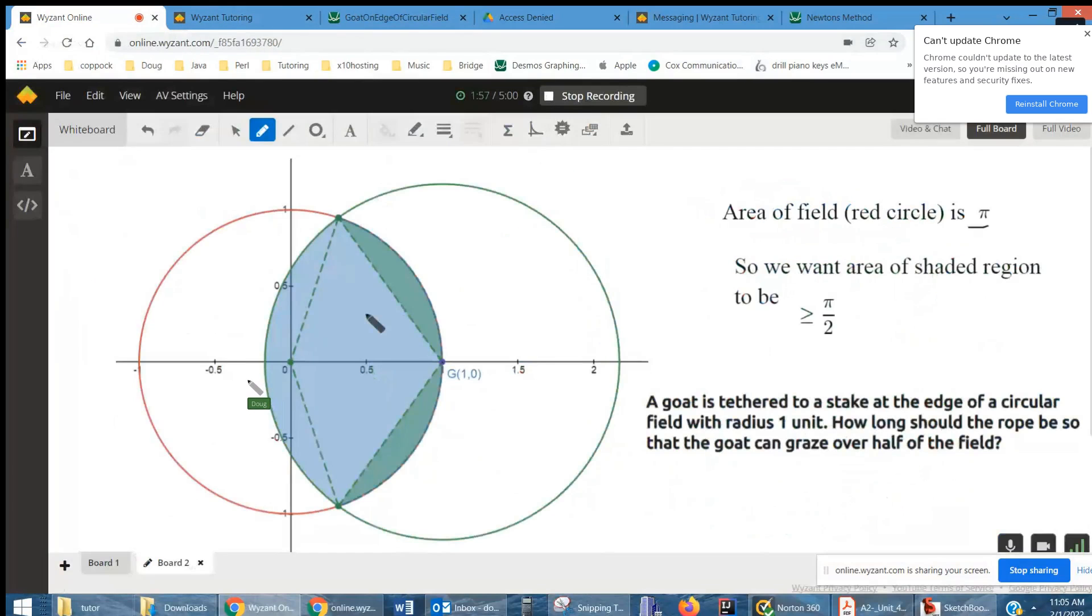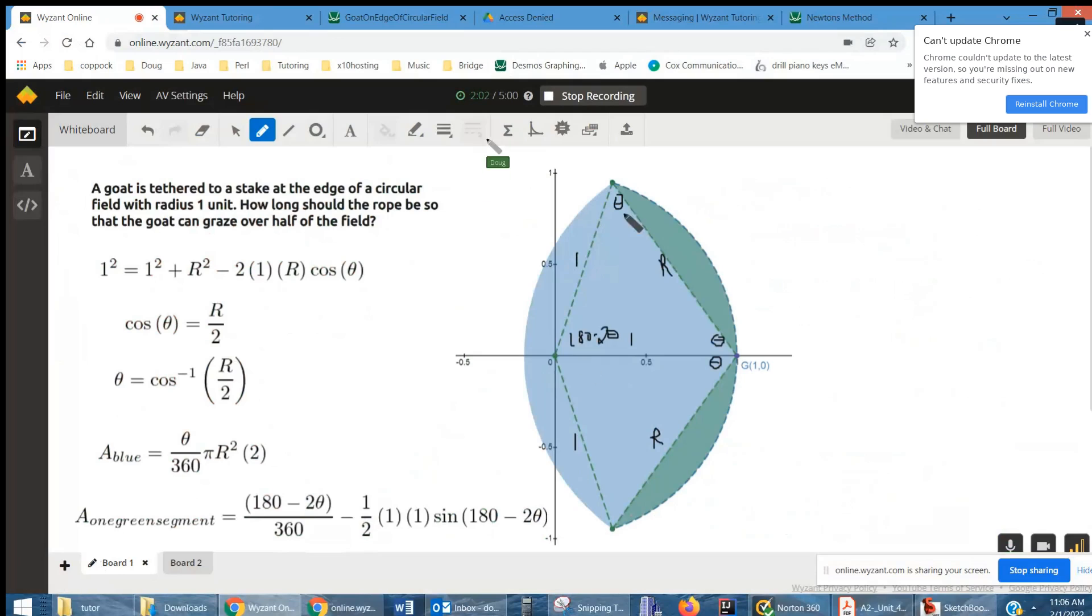So I'm going to go to board 1 on Ysant and give you some ideas how we might find the area of the shaded region. If we draw these dotted lines, those are radii of the field, 1. And the distance from the center of the field to where the goat is tethered is also 1. And this distance right here, capital R, is the radius of the tethered goat, the circle containing the tethered goat.